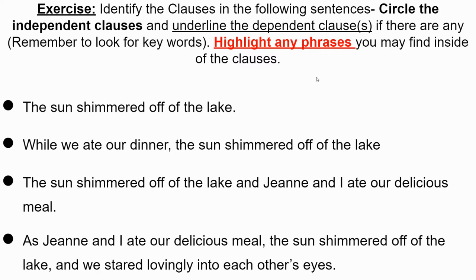So that's where the difference lies. Now you'll see how clauses are used to create sentences. 'The sun shimmered off of the lake' — subject: sun, predicate: shimmered — that's a good clause. Now add 'while we ate our dinner' — that's your dependent clause, comma, then the independent clause. Remember: dependent clause, comma, independent clause. 'While we ate our dinner' — subject: we, predicate: ate — that's a dependent clause followed by an independent clause. So you build from a simple sentence to a complex sentence.